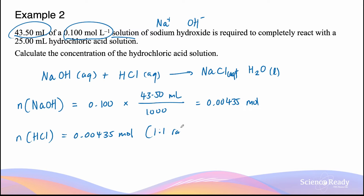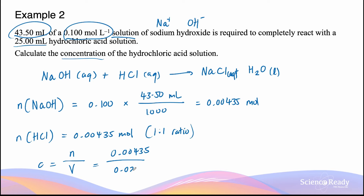This is a one-to-one ratio. We're given the volume of the hydrochloric acid solution and need to calculate its concentration. Concentration equals moles divided by volume: 0.00435 moles of HCl divided by 0.025 liters. I've converted 25 milliliters to liters by dividing by 1000 to get the final answer in moles per liter. This gives 0.174 moles per liter, or 0.174 M.